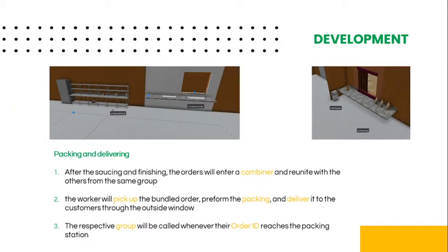After the sourcing and finishing, the orders will enter a combiner and reunite with others from the same group. When this happens, the worker will pick up the bundled order, perform packing, and leave it to the customers through the outside window. The respective group will be called whenever their order ID reaches the packing station.